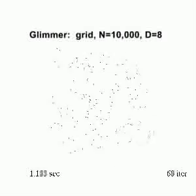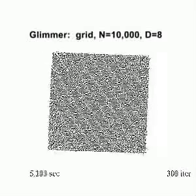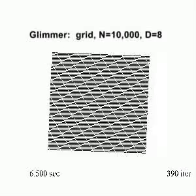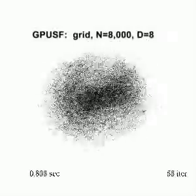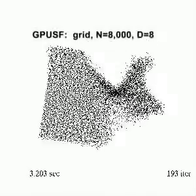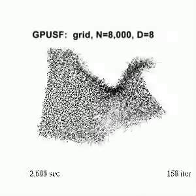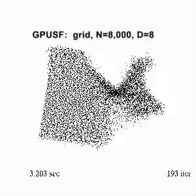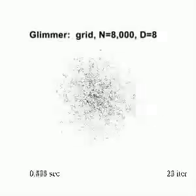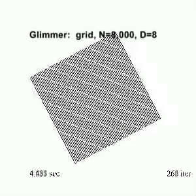We now see the multi-level Glimmer on the same synthetic dataset of 10,000 points, a 2D grid originally embedded in 8D space. When we run GPUSF alone instead of as a component within Glimmer on an 8,000-point grid, the single-level algorithm gets caught in a local minimum. Running Glimmer on the same dataset, we see that the twist is resolved quickly at a coarse level of the hierarchy.